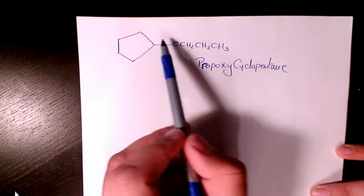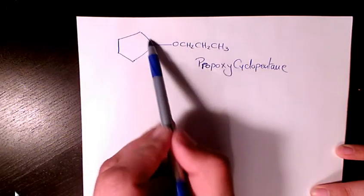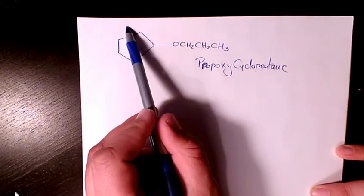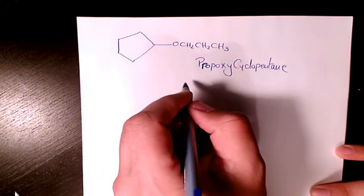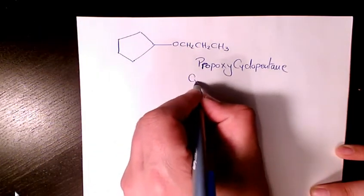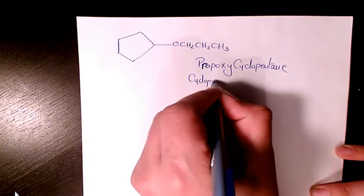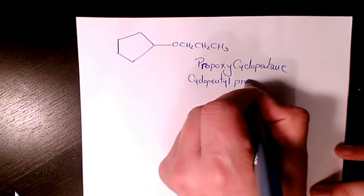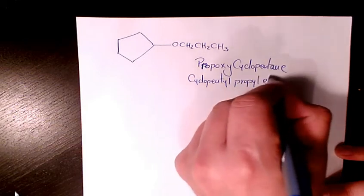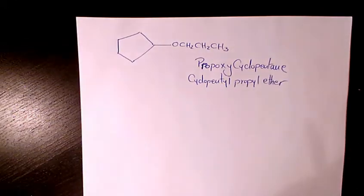That's propyl, that's cyclopentyl. So we can have cyclopentyl propyl ether. So that's the common name of this organic compound.